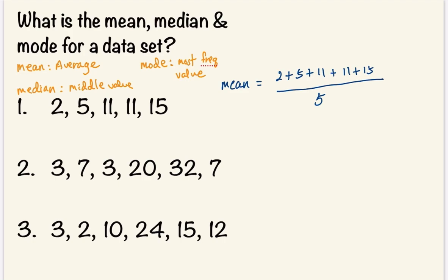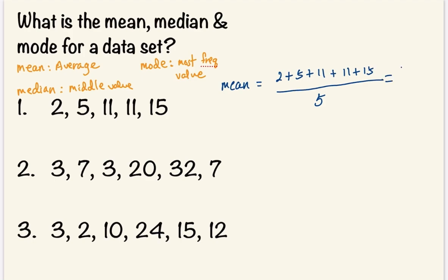The mean, once again, is essentially the average. It is the sum of all the values divided by the number of values. Add up everything in the numerator to get 44 and divide it by five. This gives us 8.8.